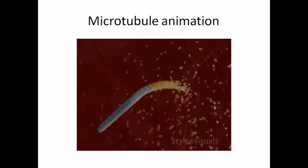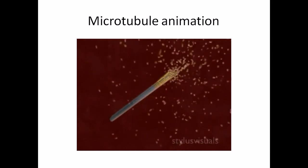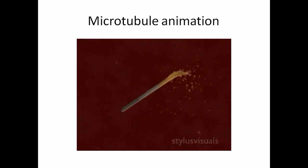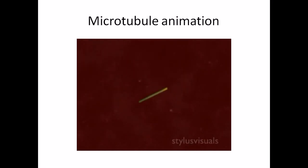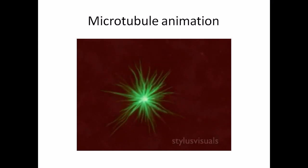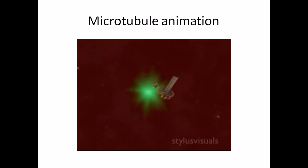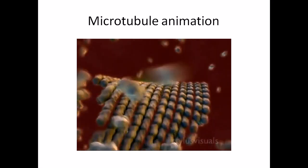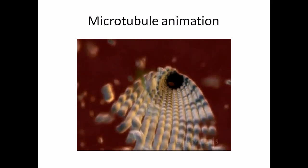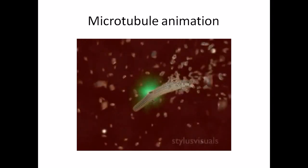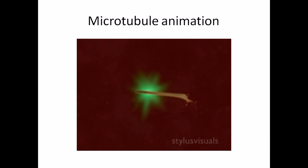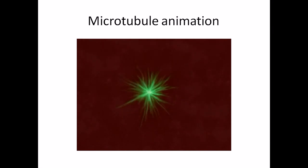Microtubule growth occurs by sequential sheet extension followed by microtubule closure, driven by the hydrolysis of GTP. Microtubules switch between growing and shrinking phases via these structural intermediates, giving rise to a very dynamic cellular cytoskeleton that performs essential functions - from transport of cellular organelles to division of genetic material between daughter cells during cell division. Microtubules are fascinating nanodevices that have evolved to undergo amazingly complex assembly processes.